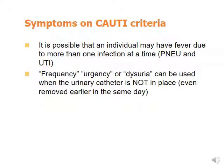Frequency, urgency, and dysuria can be used when the urinary catheter is not in place. This applies only for a short duration — the catheter must have been removed on the day of symptoms or the day before to consider frequency, urgency, or dysuria as CAUTI symptoms.